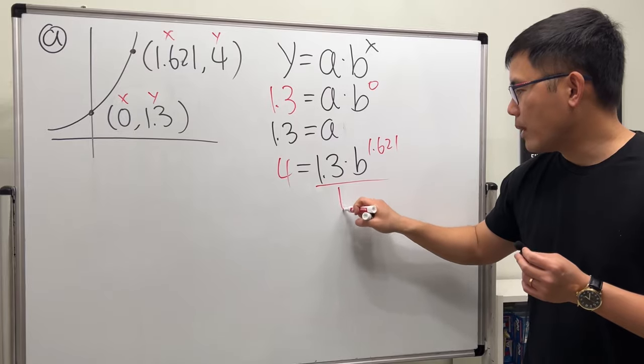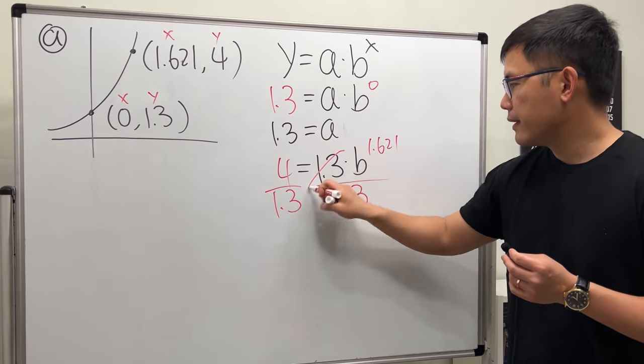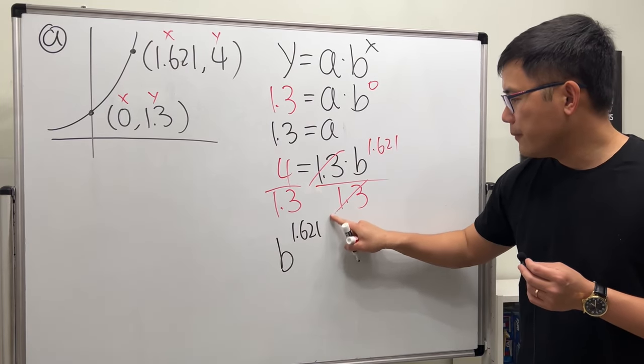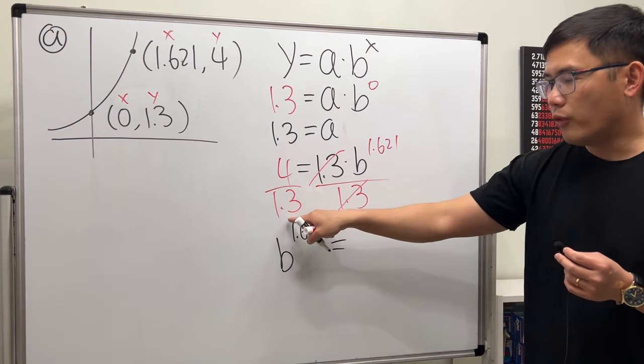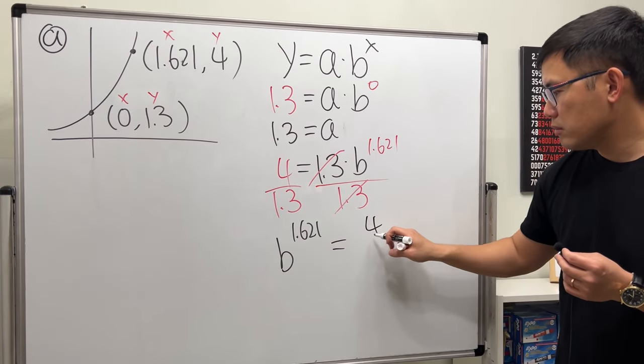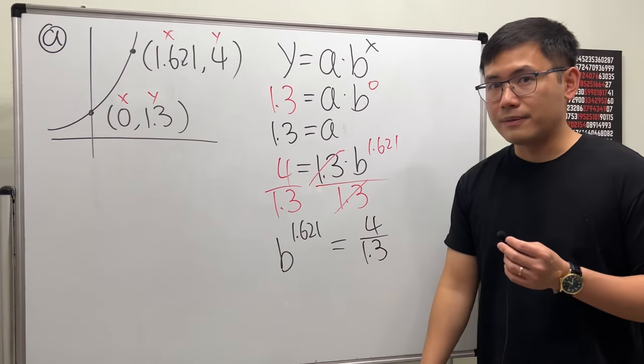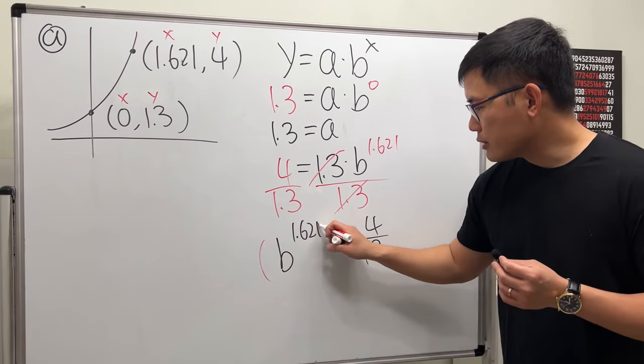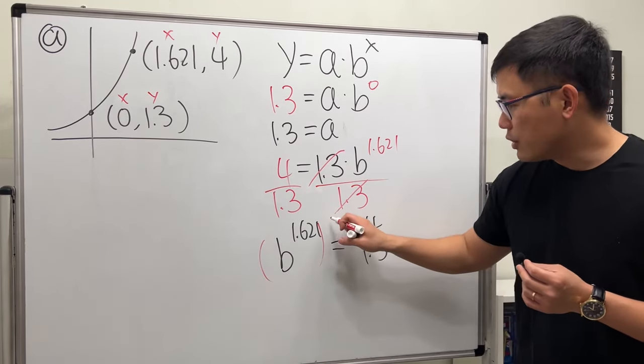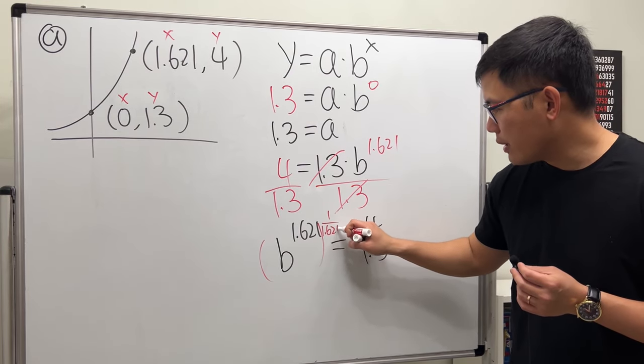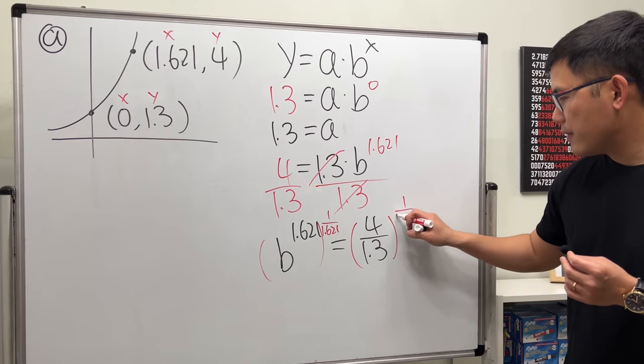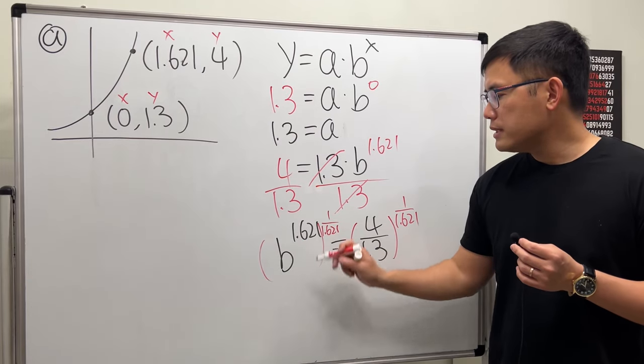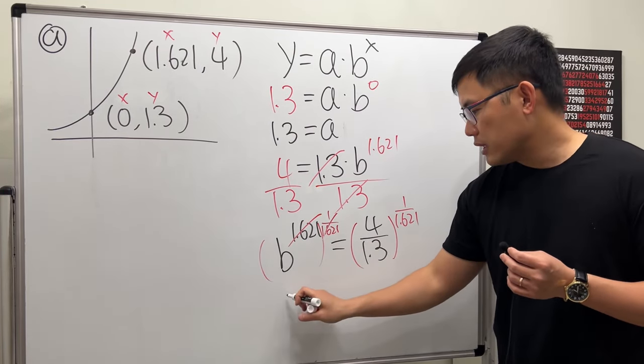Let's go ahead and divide 1.3 on both sides. b to the 1.61 power, and that is equal to 4 over 1.3, but I'm just going to keep it as it is, and I will use a calculator for everything later. Finally, to get rid of this power, we are just going to raise both sides to its reciprocal power, and that is 1 over 1.61. Because this way, when we multiply the powers, they cancel each other out.